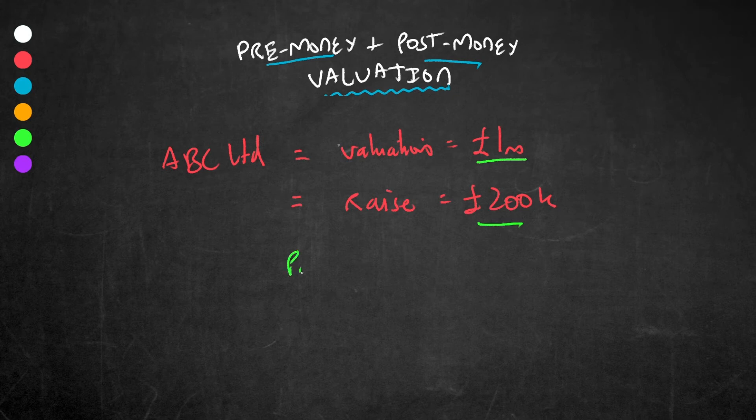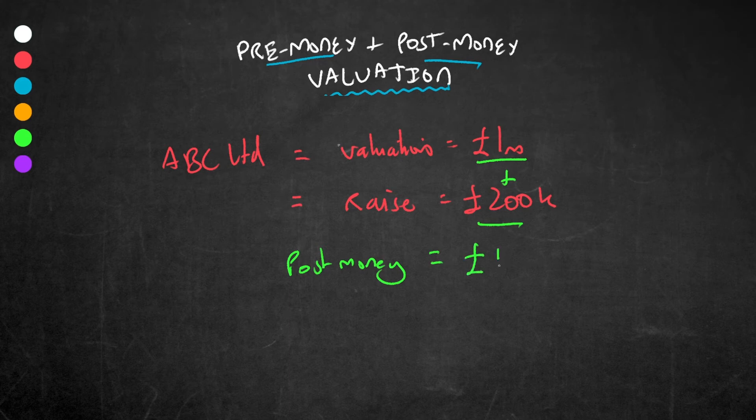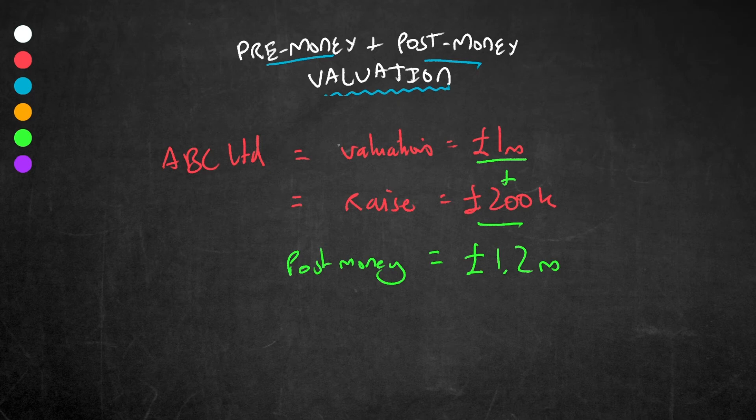So its post-money valuation is therefore one million plus 200,000, which is 1.2 million. Are you with me so far? If you are, then great. Here's a question for you: How much equity has now been given away to this new investor who's put 200,000 pounds in? In other words, how much of the business does this new investor now own?